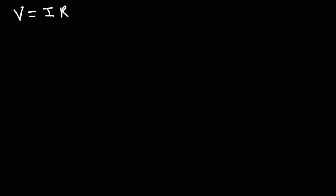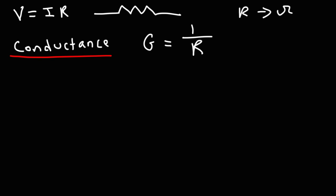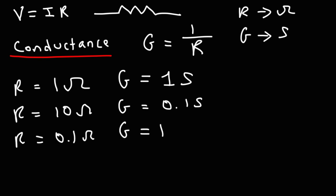We've covered voltage and current; now let's look at resistance in more detail. The electrical symbol for a resistor is measured in ohms. Conductance is the opposite of resistance — inversely related. Conductance G = 1/R, measured in Siemens. A 1-ohm resistor has conductance of 1 Siemen; a 10-ohm resistor has 0.1 Siemens. As resistance increases, conductance decreases.